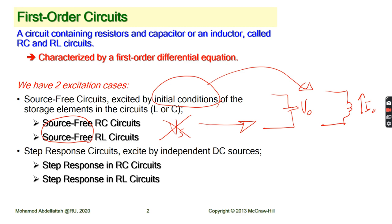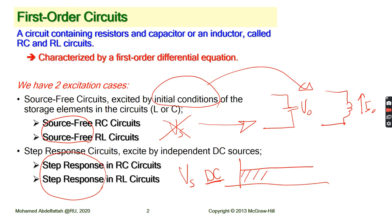The second type is called step response, which means you have a DC supply. When you apply a DC supply to the circuit — whether voltage or current — we call it step response. In this case, you may or may not have initial conditions; it depends on the circuit. Let's have some examples.